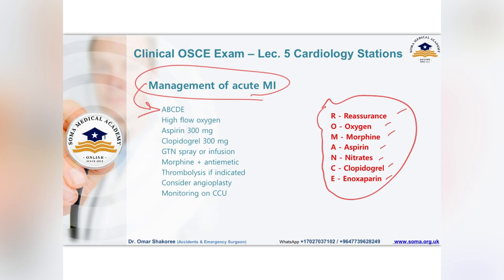ABC should be done first as in any emergency, but remember oxygen is high flow. Aspirin is 300 milligrams, clopidogrel is also 300 milligrams. Give nitrate as spray or infusion, morphine, and antiemetic also. Consider thrombolysis if indicated, angioplasty, and monitor the patient on a cardiac care unit.